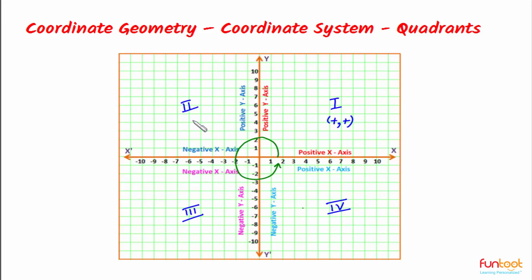In the second quadrant, the X coordinate is negative and Y coordinate is positive. In the third quadrant, both X and Y coordinates are negative.